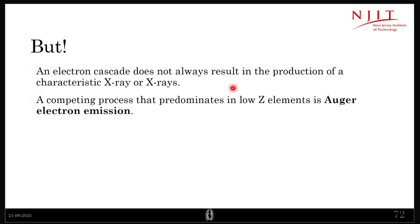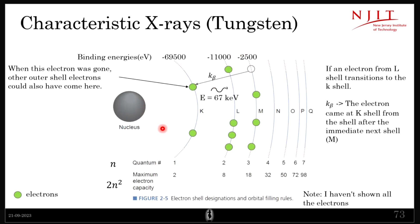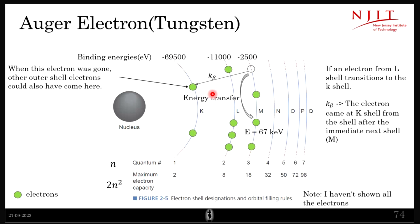Not every electron transition will emit an X-ray. There is another process called Auger electron emission. Consider the same example: there is a vacancy at the K-shell and an electron from the M-shell jumps to fill it. Normally for characteristic X-ray production, an X-ray would be emitted. But with the Auger process, instead of emitting an X-ray, this energy is transferred to another electron in the same shell.